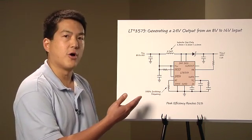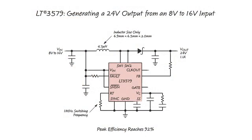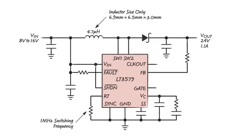This first drawing shows an 8 volt to 16 volt input to 24 volt output boost converter using the LT3579. This circuit is capable of producing up to 1.1 amps of output current. Notice that the power switch is integrated inside of the IC.